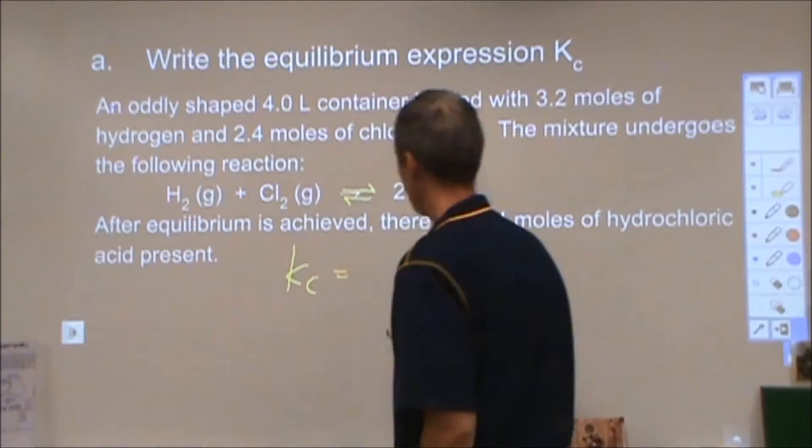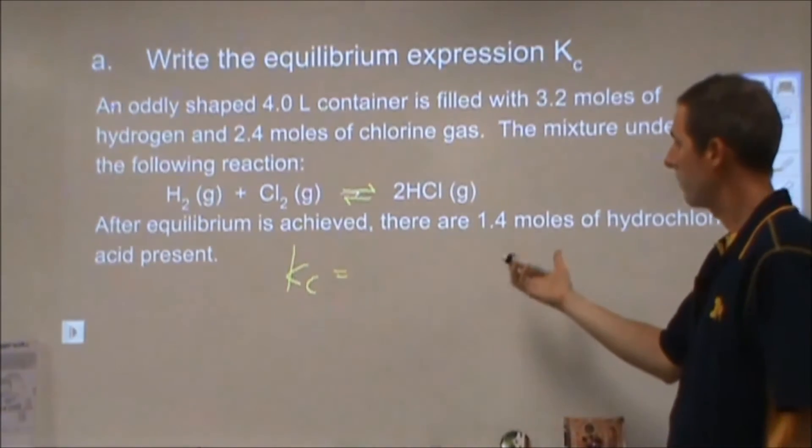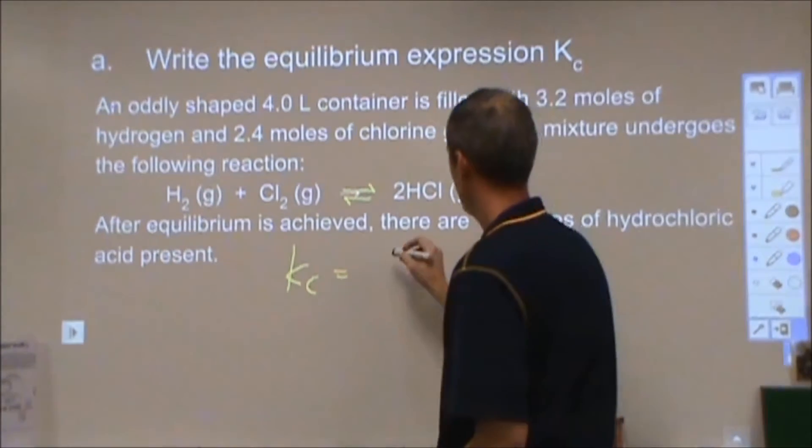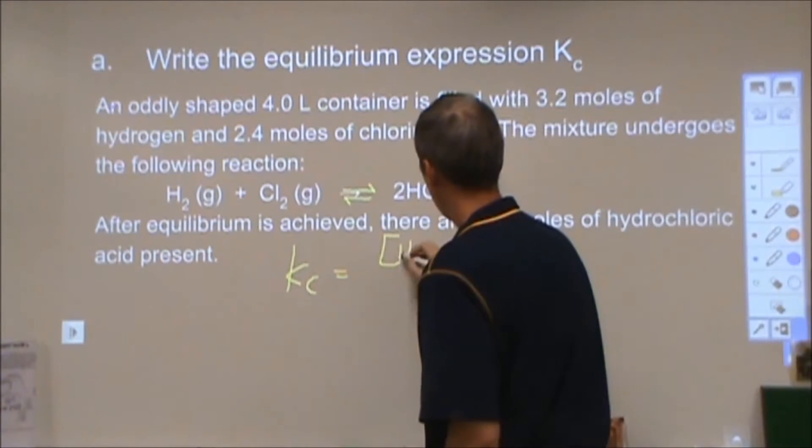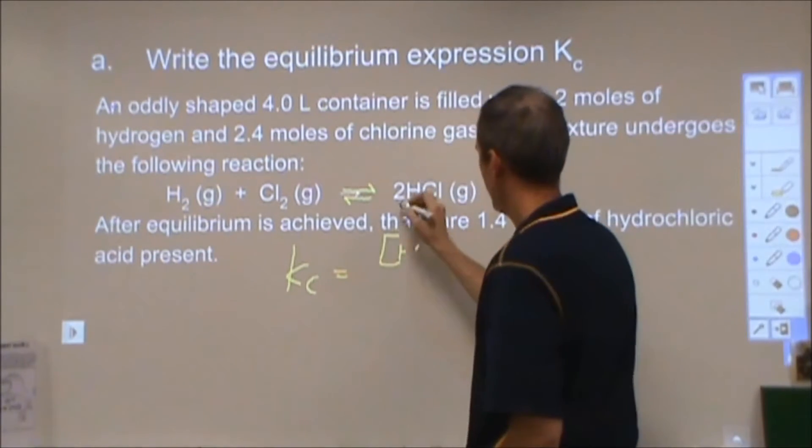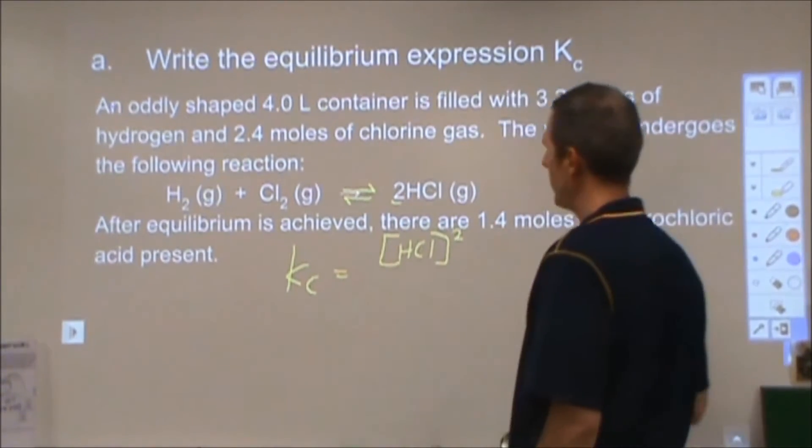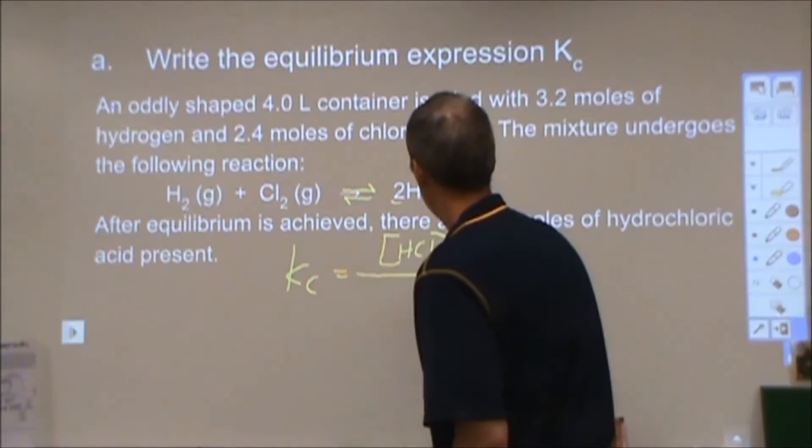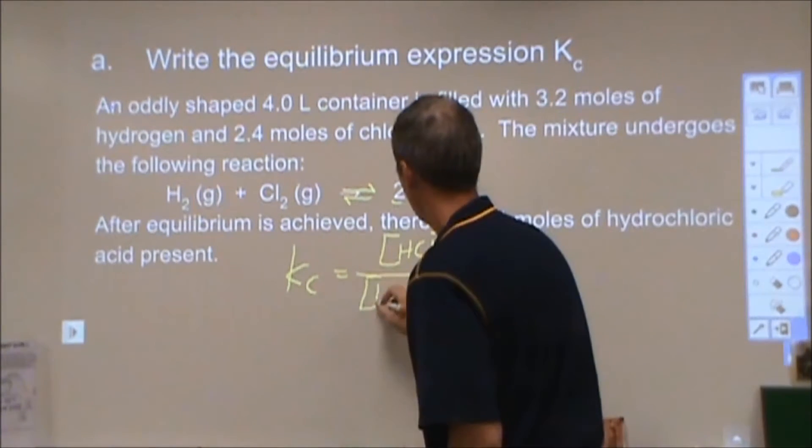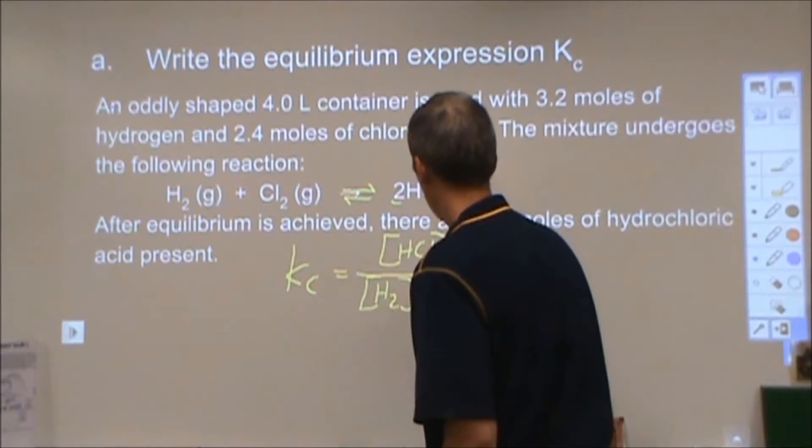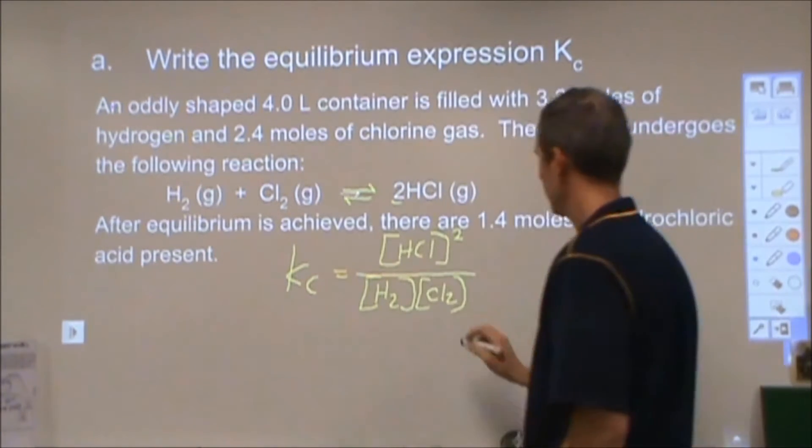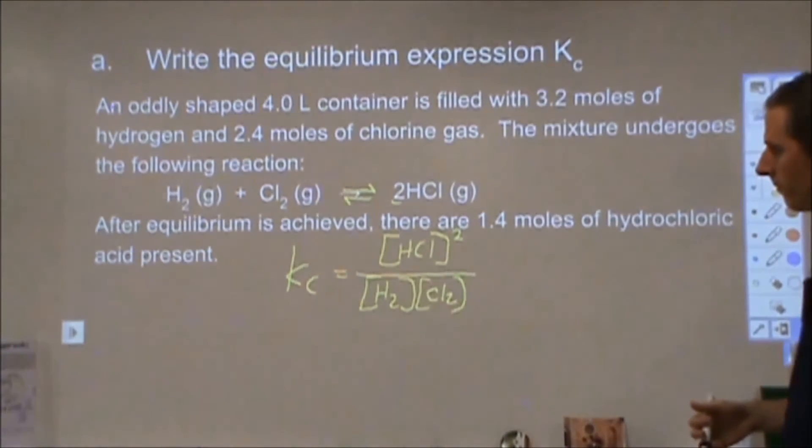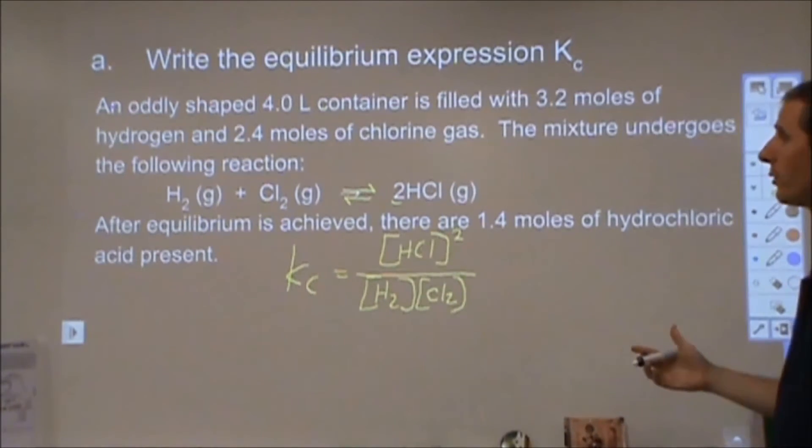My K expression is just going to be the products over the reactants. So I have one product, hydrochloric acid, and the two that I use as the superscript for the exponent. And then on the denominator I have hydrogen gas and chlorine gas, just like this. So that's all I need to do for that first part.